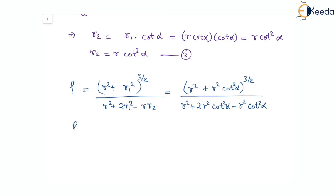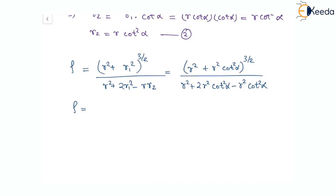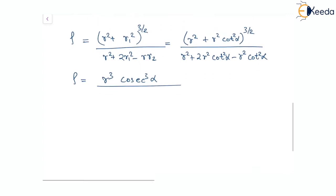In the numerator, 1 plus cot squared alpha equals cosec squared alpha. So this term becomes r squared cosec squared alpha, the square root of which is r cosec alpha, and the cube is r cubed cosec cubed alpha. In the denominator, we have r squared cot squared alpha, which is also r squared times 1 plus cot squared alpha, which equals r squared cosec squared alpha.